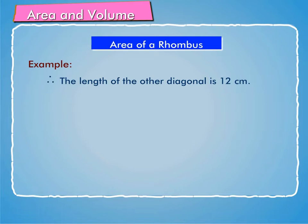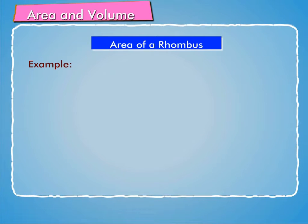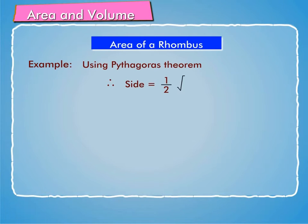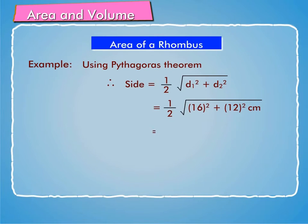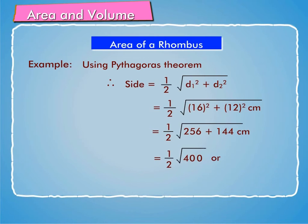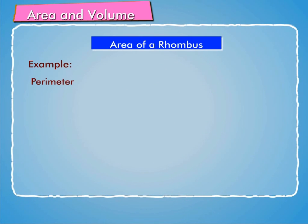Therefore, the length of the other diagonal is 12 cm. Now to find the perimeter, we first find the length of a side. Side = (1/2)√(D1² + D2²) = (1/2)√(16² + 12²) = (1/2)√(256 + 144) = (1/2)√400 = (1/2) × 20 = 10 cm. Hence, perimeter of the rhombus = 4 × 10 = 40 cm.